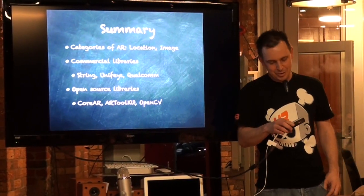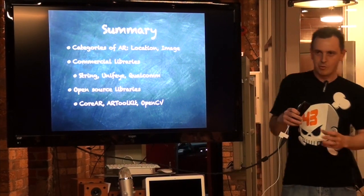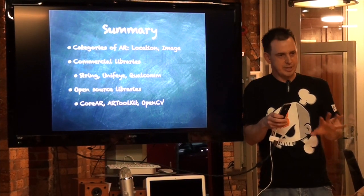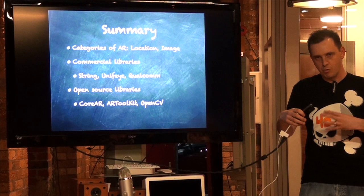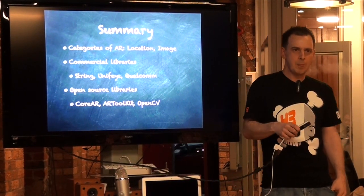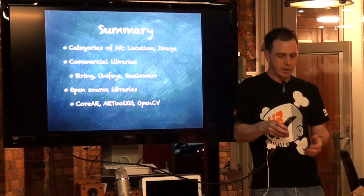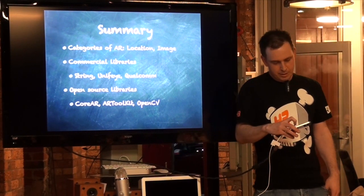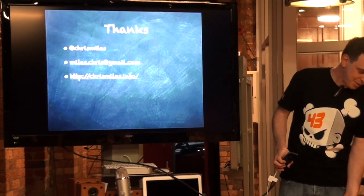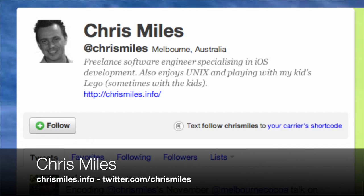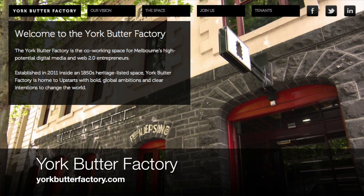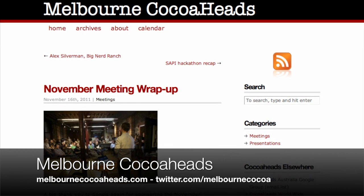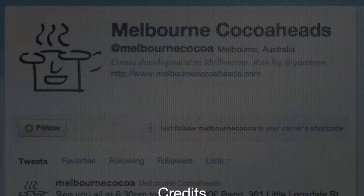To summarize: I talked about two main categories of AR today. Location-based is about positioning the device in the real world and projecting nearby objects through the camera. Image-based is about real-time image processing on the camera input to detect predefined images and draw on top of them. The commercial libraries were String, Unify, and Qualcomm — all really good with different positives and negatives. Open source options included Core AR, AR Toolkit, and OpenCV if you want to get your hands really dirty. Many thanks to Chris for presenting, and to the York Butter Factory for hosting. You can learn more at yorkbutterfactory.com or melbournecocoaheads.com.